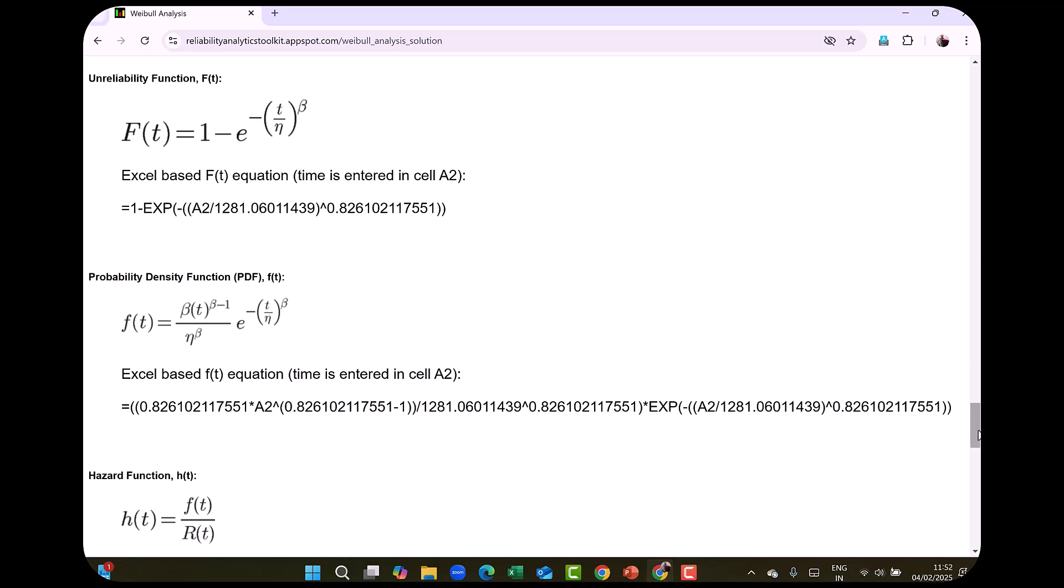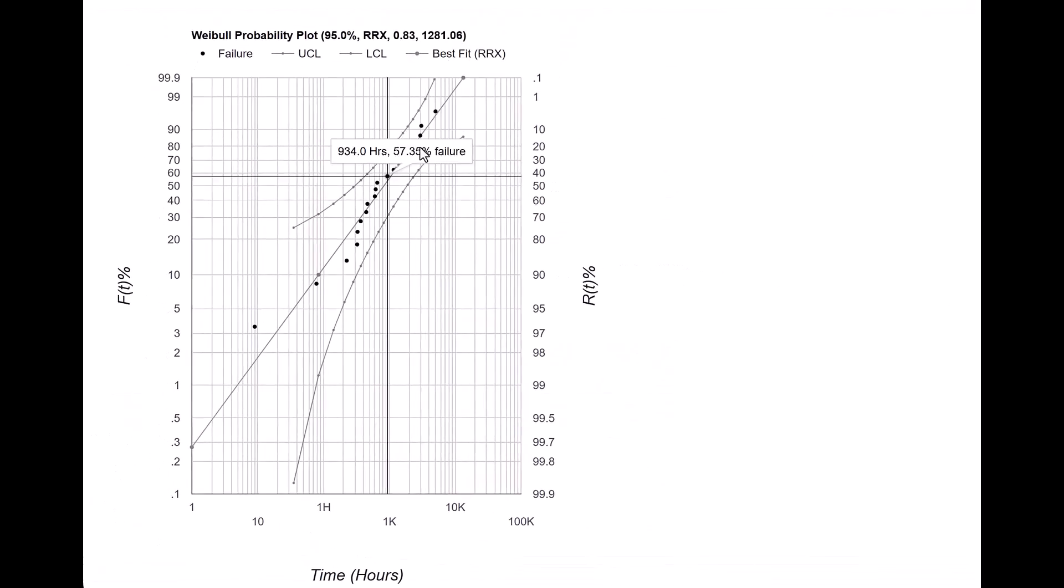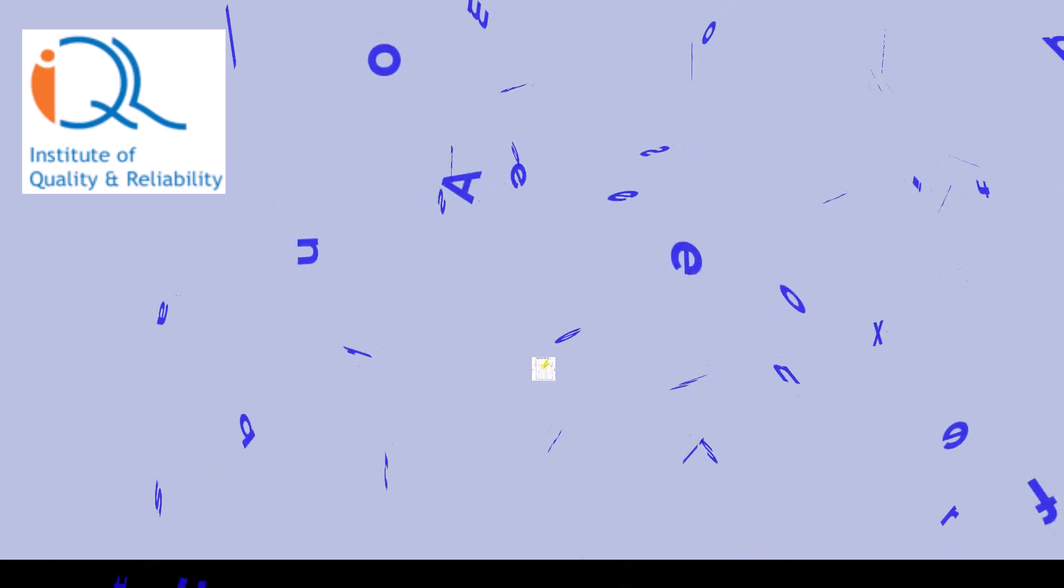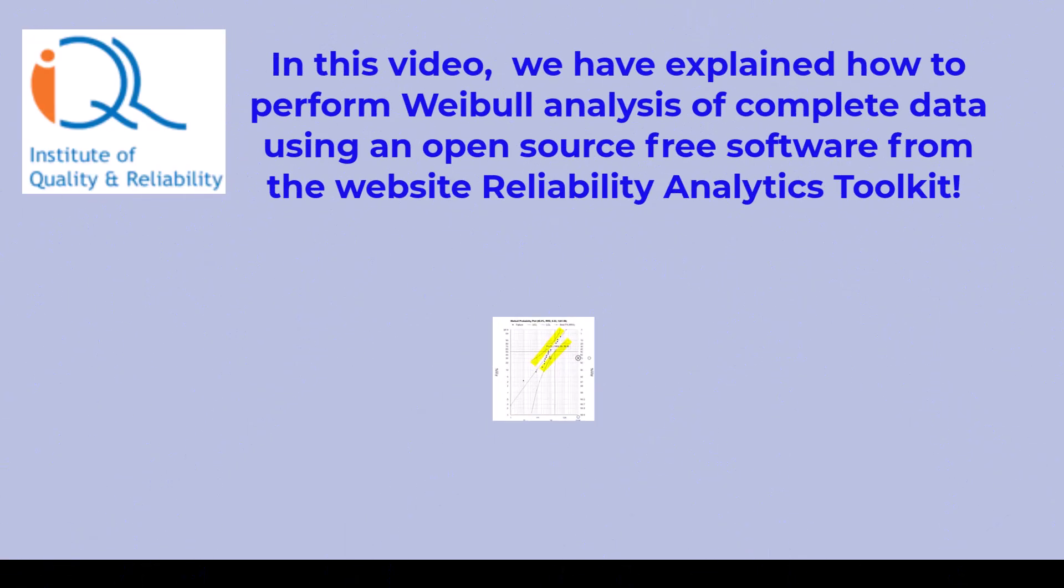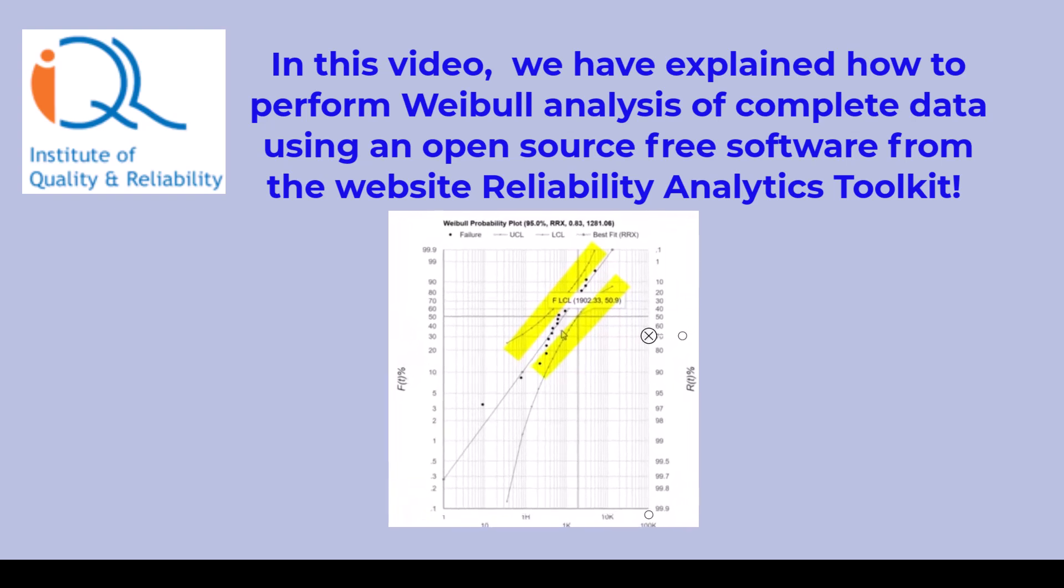So I would say that if you are using this software you should look at the probability plot and whether the points are near the straight line. In this video we have explained how to perform Weibull analysis of complete data using an open source free software from the website reliability analytics toolkit. Hope you liked our video.